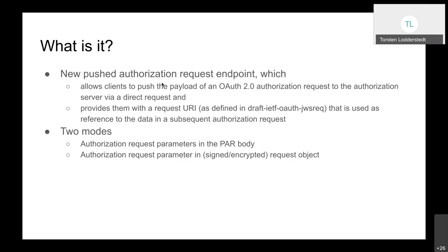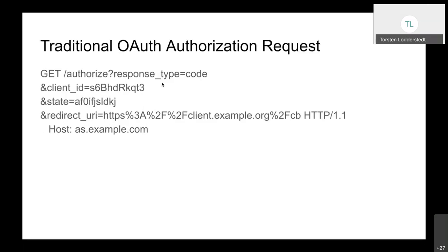This PAR draft supports two different modes of operation. The first is that all authorization request parameters go directly in the body of the PAR HTTP request — that's the simple method. There's another method where a signed or encrypted request object can be used in the PAR body. Both modes are mutually exclusive. I will come back to what the differences are between those modes.